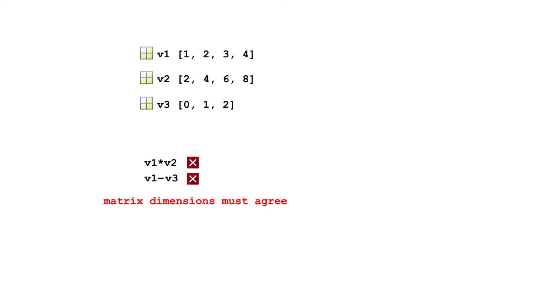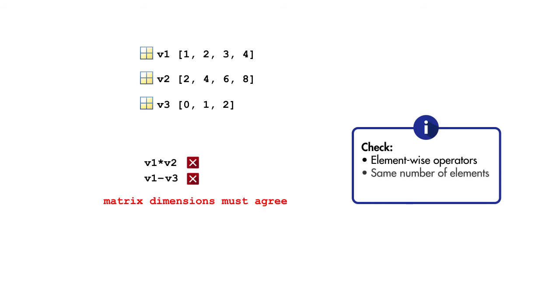Don't worry! If you're not using matrices, but get a matrix dimension error while trying to perform an operation on corresponding elements of two vectors, check that you're using the element-wise operators, that your vectors have the same number of elements, and that the vectors are both row or both column vectors.